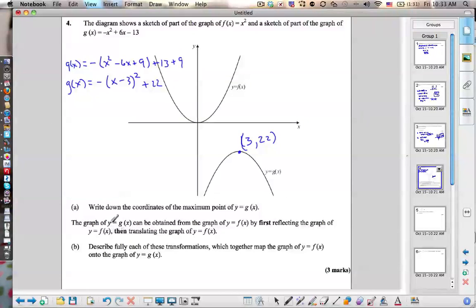So, okay, graph, let's see here. Describe fully the transformations which map f of x to g of x. So shift right 3, down 22, and well, let's talk about this first. Flip, flip over x-axis first, so multiply by negative, so it flips the function.